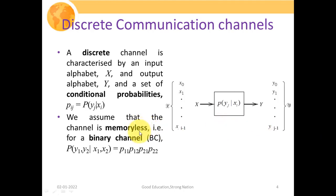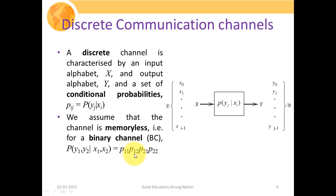We assume the channel is memoryless — the occurrence of one symbol will not affect the occurrence of another symbol. For a binary channel capable of generating two symbols, the joint probability P(Y1, Y2 | X1, X2) equals the multiplication of individual probabilities: P(1,1) · P(1,2) · P(2,1) · P(2,2), where P(1,1) is the probability of receiving the first symbol when the first symbol was transmitted, and so on for each combination.